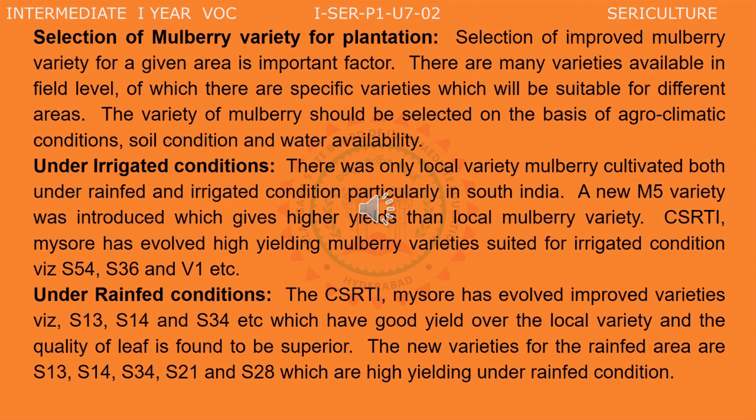There are many varieties available at field level, of which specific varieties are suitable for different areas. The variety of mulberry should be selected on the basis of agroclimatic conditions, soil condition, and water availability. Most of the farmers are illiterates, so they have to be advised to select the specific variety depending upon the agroclimatic conditions, the condition of the soil, and availability of water.